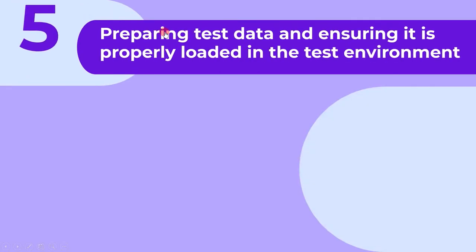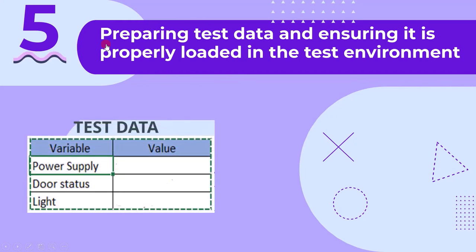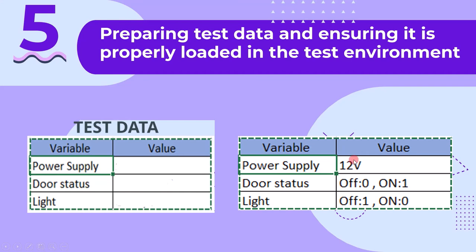The fifth main activity is preparing test data and ensuring it is properly loaded in the test environment. If you recall, in the test design stage we identified the test data but the values were missing. In the test implementation stage, we create the test data by updating those values.